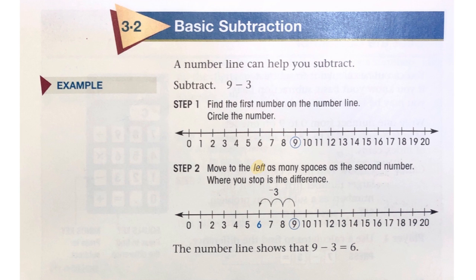And moving to the left is important. So starting at 9, minus 3, 1, 2, 3. 6. The number line shows that 9 minus 3 equals 6.